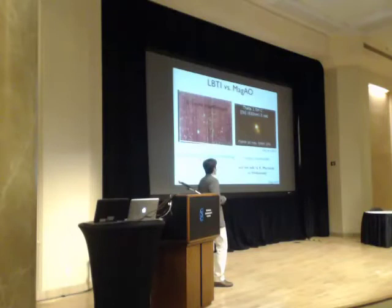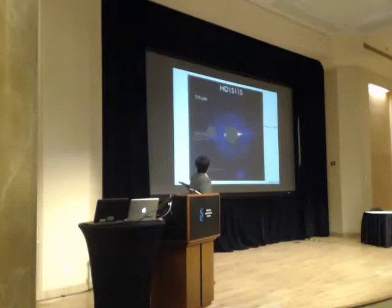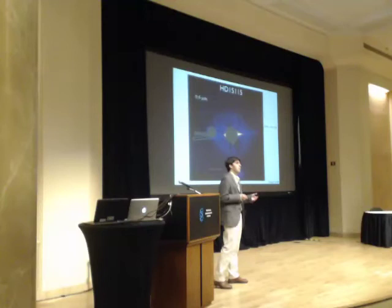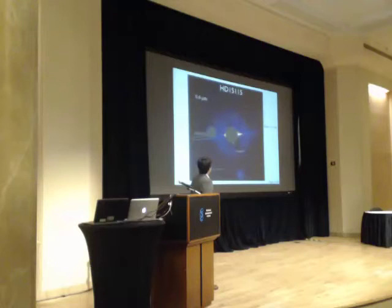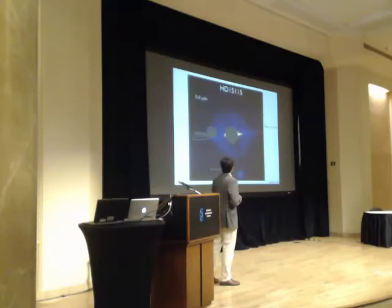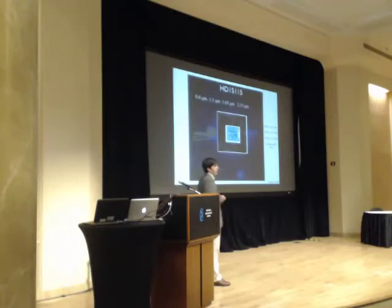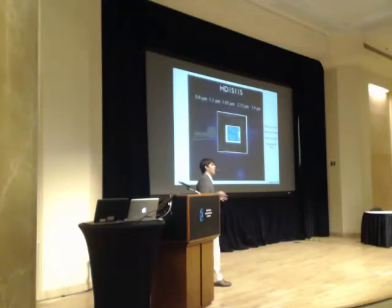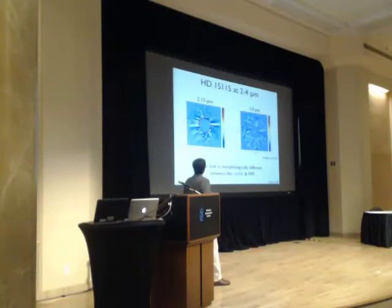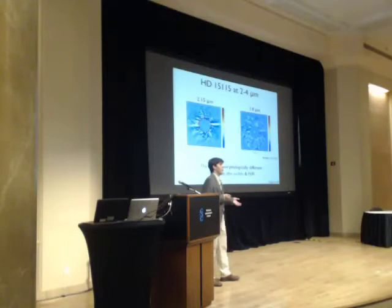Now to some actual disk science: HD 15115 is a very famous debris disk around a nearby F-star. In 2007 Paul Kalas imaged it and found it to be very asymmetric, extending out to about 12 arc seconds. Looking at further wavelengths it's already appearing more symmetric as you go to H band. Here are new images obtained with LBT LMIRCAM — this is K band and this is L prime — showing serious changes as you go to longer wavelengths, with the disk becoming much more symmetric.